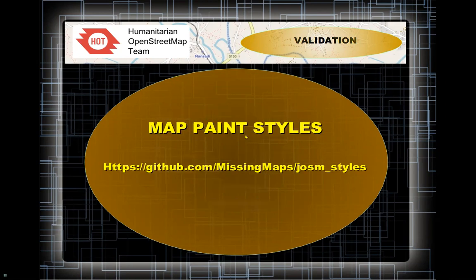Another useful tool in JOSM is the map paint styles. The map paint styles give you visual information about where errors are — an additional help to quickly and easily see where errors are. I've posted the link in the chat. There is a very useful tool called the Missing Maps Validating Tools. Familiarize yourself with the map paint styles and how to use them — I'll show you that when we do JOSM.